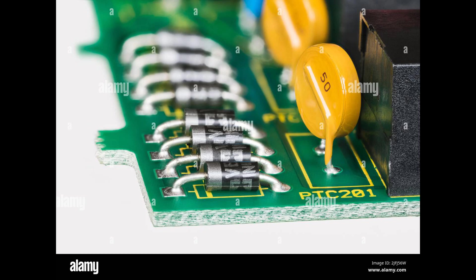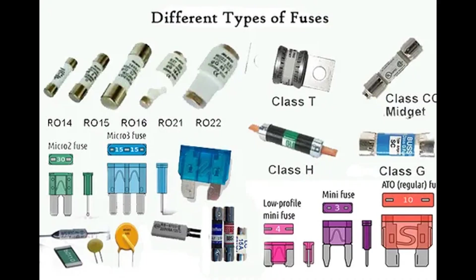In industrial applications where production continuity is crucial, automatic resettable fuses can help reduce system downtime and the need for manual intervention. Electronic fuses are also commonly used in low power circuits, such as those in battery-powered devices, where rapid replacement of traditional fuses might be inconvenient or not practical.